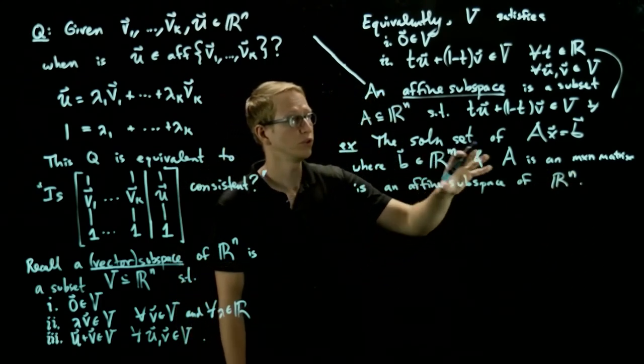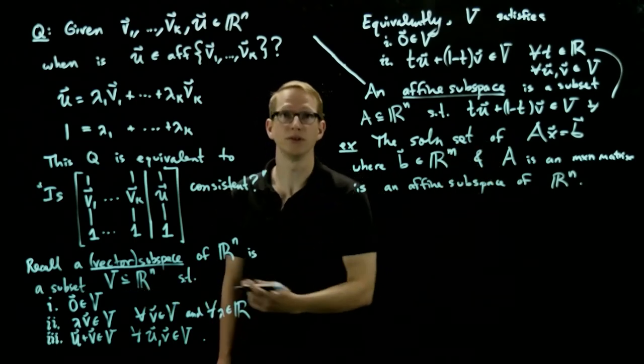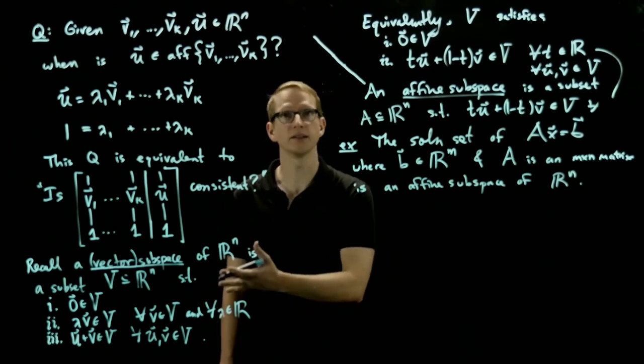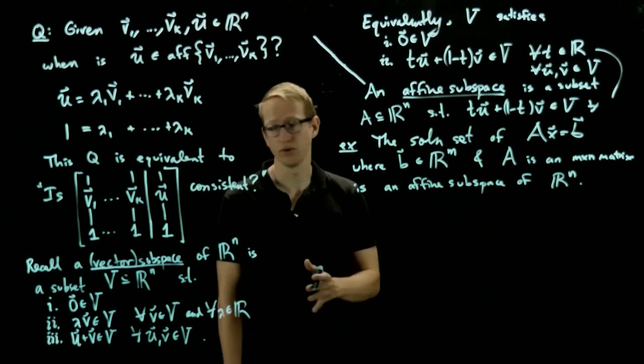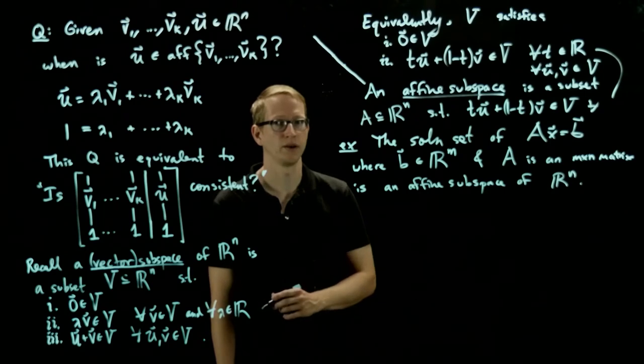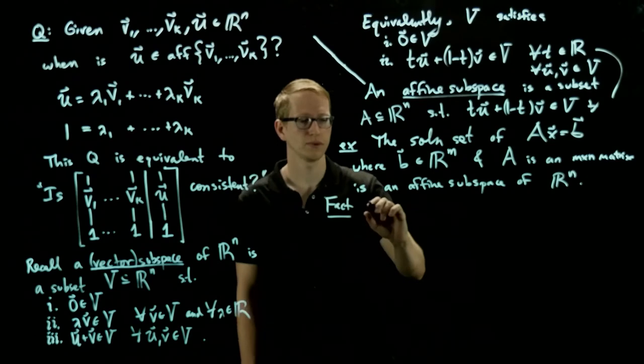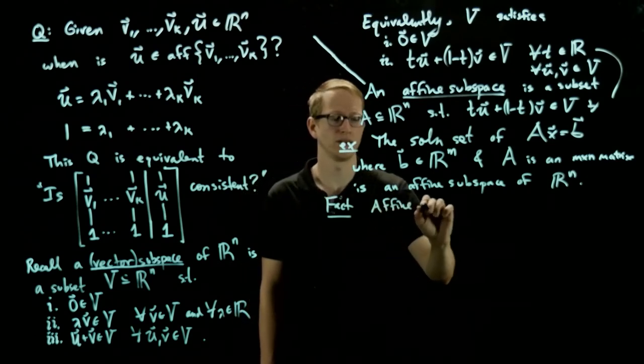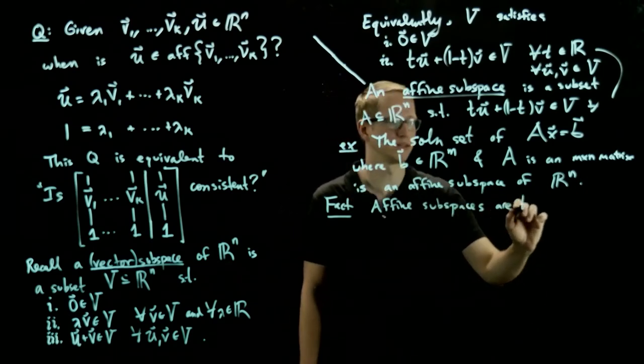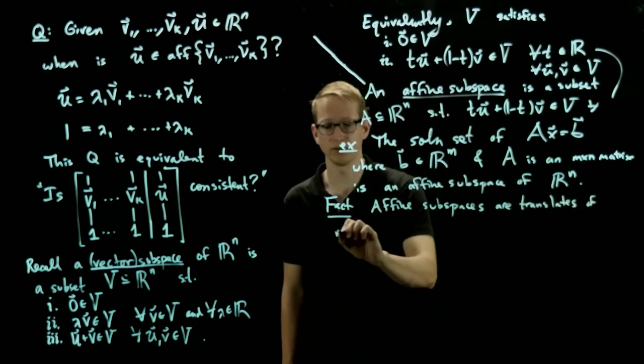So the solution set of this is an affine subspace of R^n. Now, the solution set of an inhomogeneous system is not a vector subspace because in general 0 is not a solution. In fact, when 0 is a solution, then it exactly is a subspace. And when 0 is not a solution, we get this more general notion of an affine subspace.